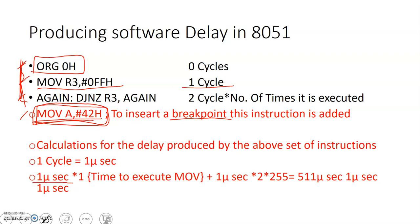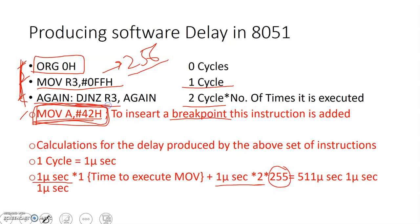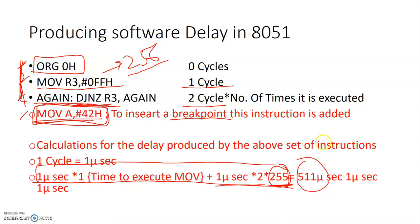MOV R3, #0FFH is a one-cycle instruction taking one microsecond. DJNZ is a two-cycle instruction. Multiplying 2 by 1 microsecond and since the number of times it will be evaluated is 255 — not 256 — because DJNZ first decrements R3 then checks if it equals zero, so one decrement happens before the first loop check. Summing it all up gives 511 microseconds.